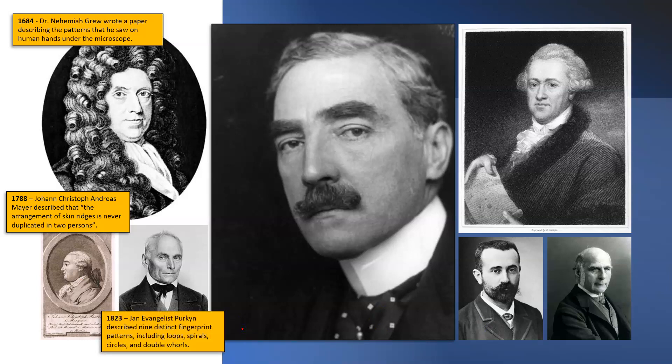In 1823, another 40 or 50 years later, Jan Evangelista Purkinji described nine distinct fingerprint patterns, including loops, spirals, circles, and double whirls. He was the first to characterize fingerprints as nine distinct classes. There will be future videos on these different classes and patterns, but he was the first in the early 1800s to start describing nine distinct fingerprint types — and by looking at a variety of fingerprints, he determined that all of them fell within these nine classes.